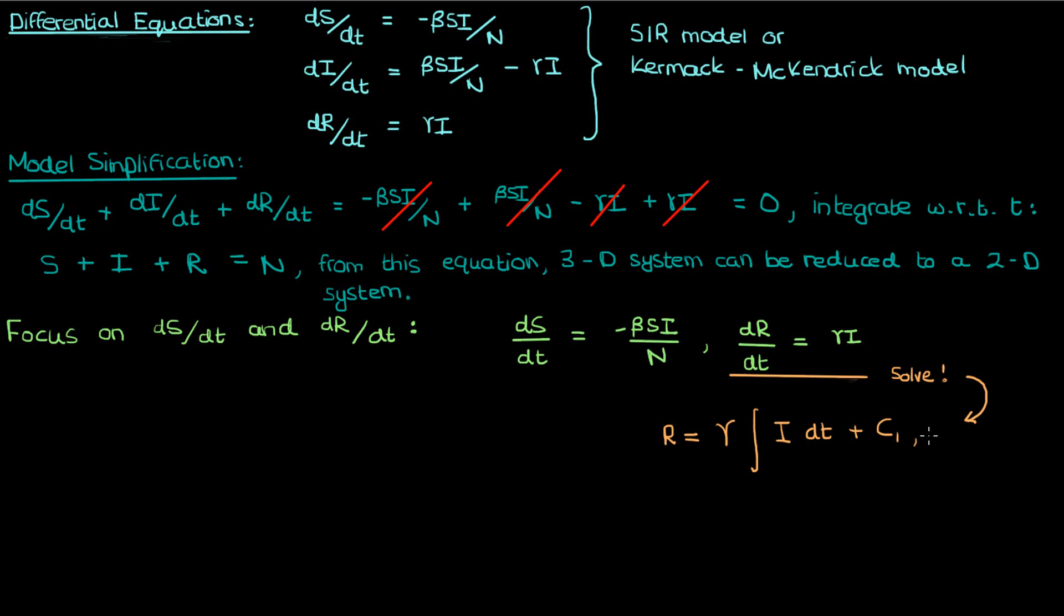Now I can't really evaluate this integral, but what I can do is an interesting trick. I'm going to isolate this integral expression, and if I do that here's what I get. Now the negative c1 over gamma is another constant which I'll call c2, in which case this is our expression for the integral of I, R over gamma plus c2, and I'm going to call this equation 1.